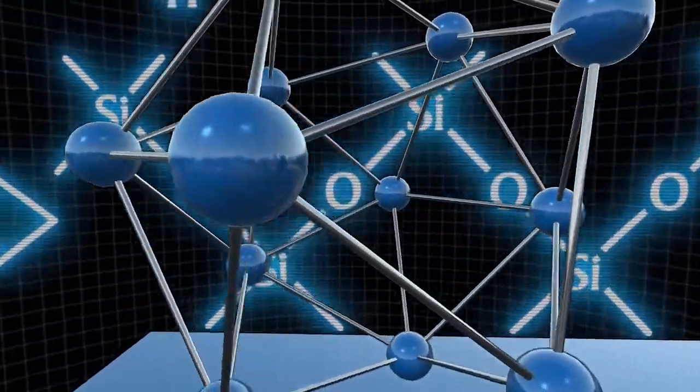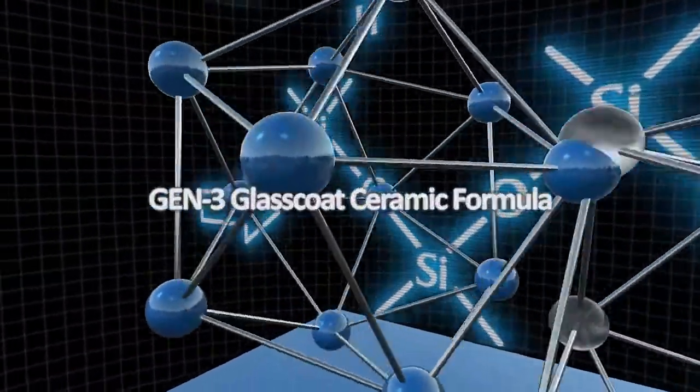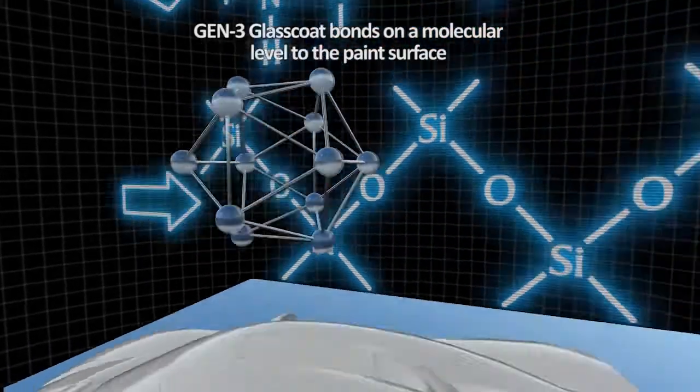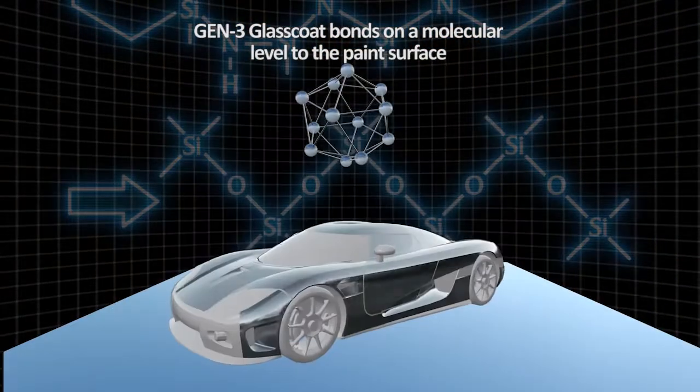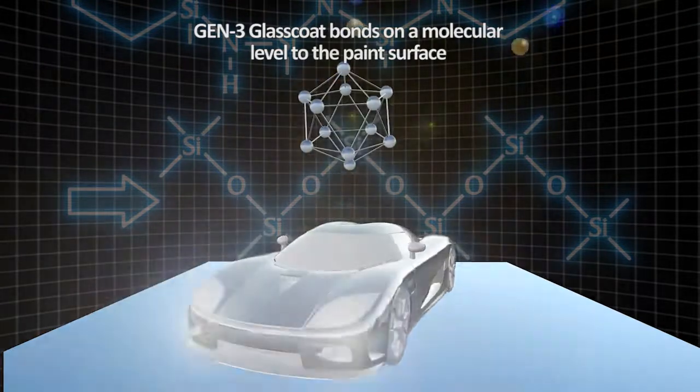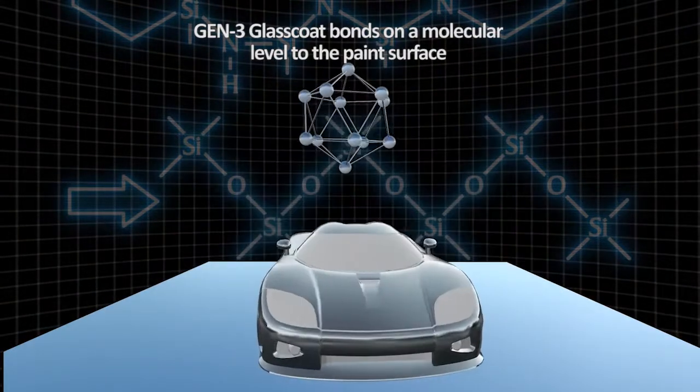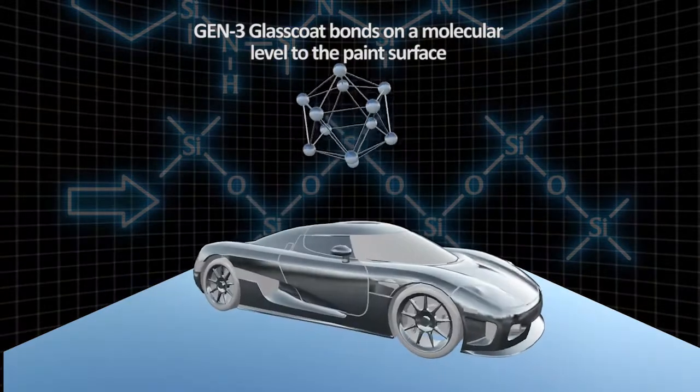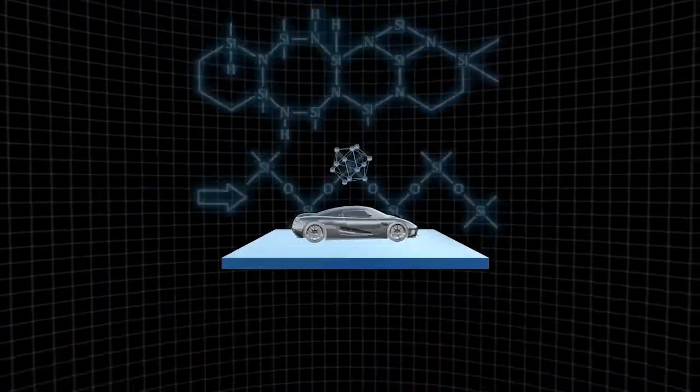Now for the science part. Gen 3 Glass Coat is a ceramic formula that bonds to your paint surface at a molecular level, protecting bodywork, windows, grills, mirrors, lights, and wheels from the elements. It helps to keep your vehicle looking like new with no need for waxing and polishing.